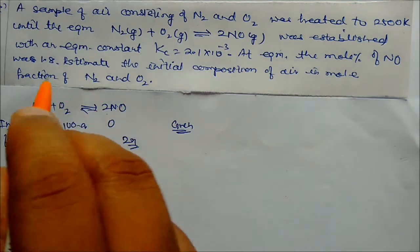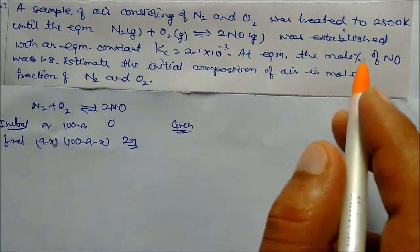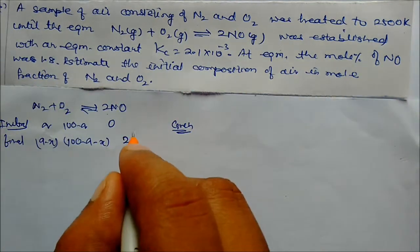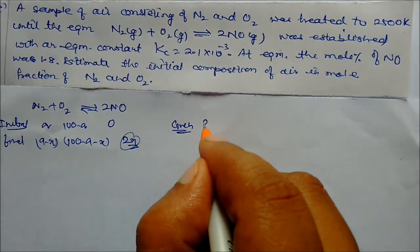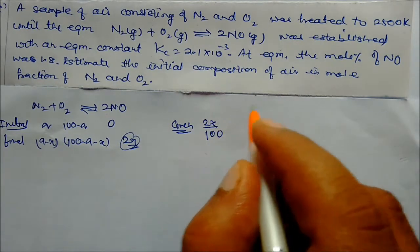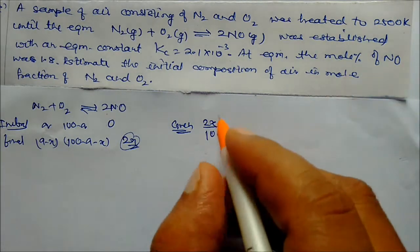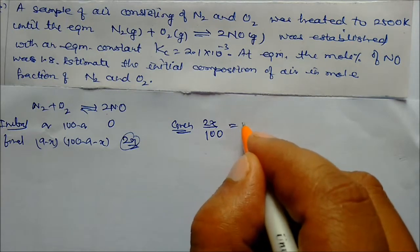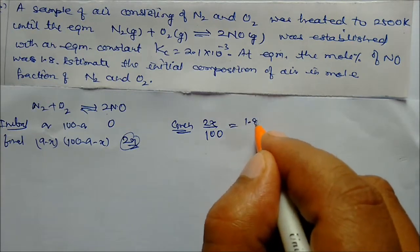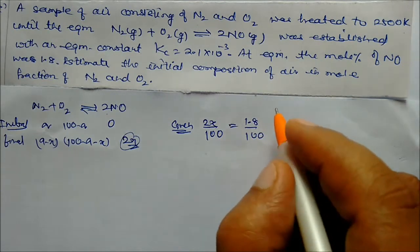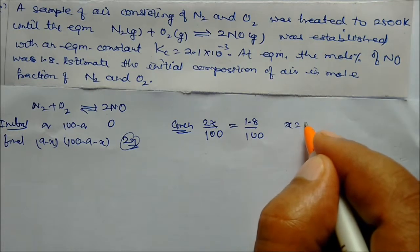It is given that the mole percent of NO = 1.8, so 2x/100 = 1.8/100, giving x = 0.9.